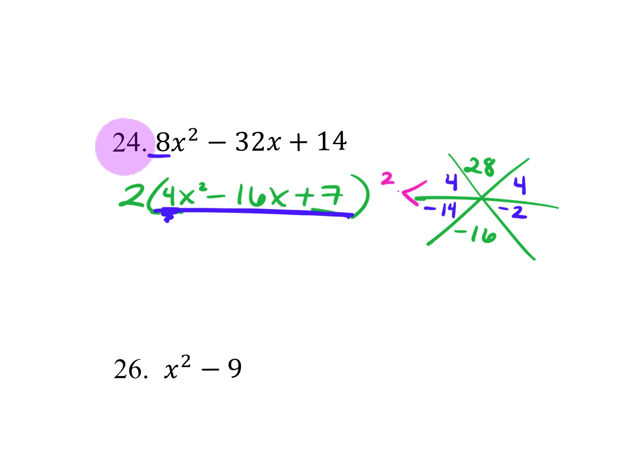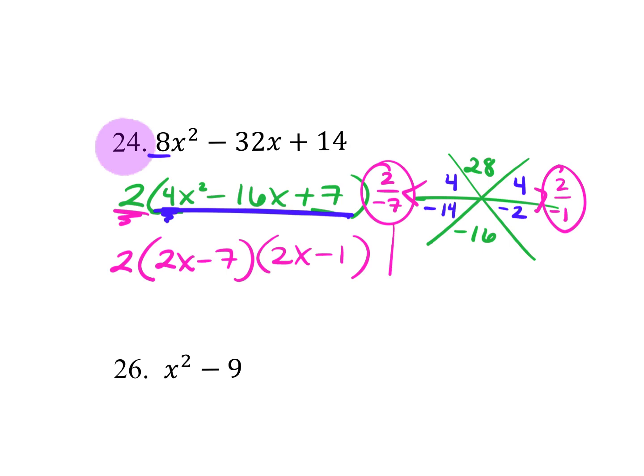And then you reduce that. So this is 2 over negative 7, and this is 2 over negative 1. So it's going to be two parentheses. That's this guy. Then it's 2x minus 7, and then it's 2x minus 1. And that's your final answer, factored form.